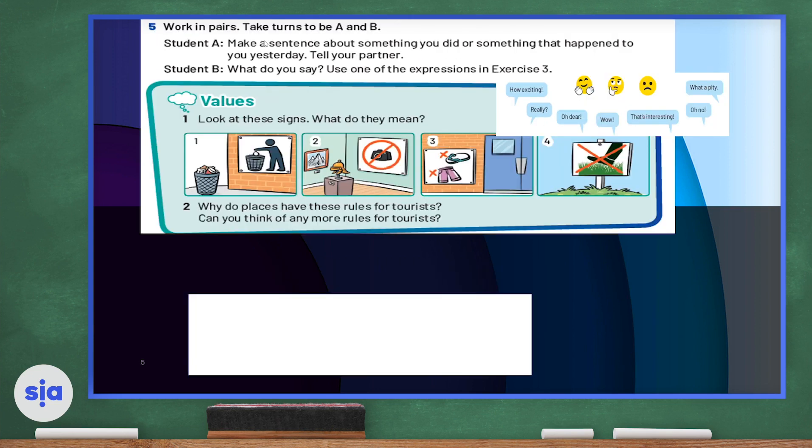Now we're going to work in pairs. You need to find a partner—could be your friend on the phone or it could be a family member. Take turns to be A and B. Student A must make a sentence about something they did or something that happened to them yesterday and tell their partner. As for Student B, they must use some of the expressions in exercise three, so you can use 'how exciting,' or 'really,' or 'oh dear,' or 'wow,' 'that's interesting,' 'oh no,' or 'what a pity.'